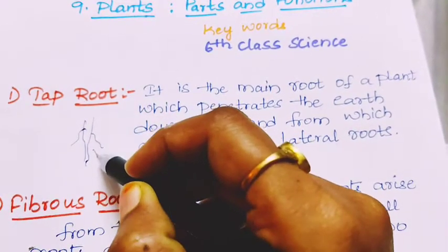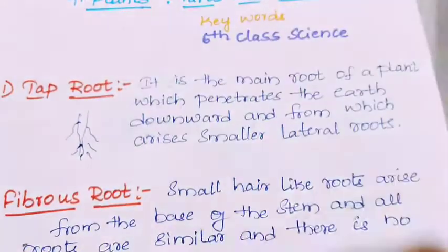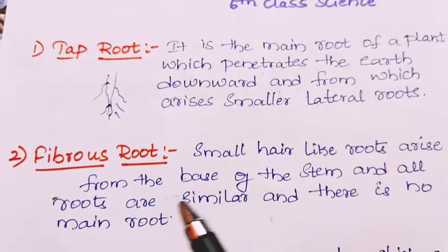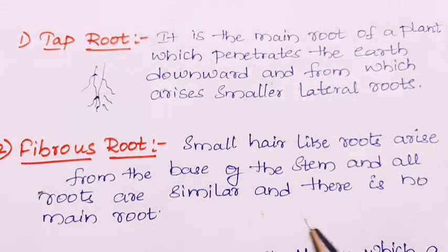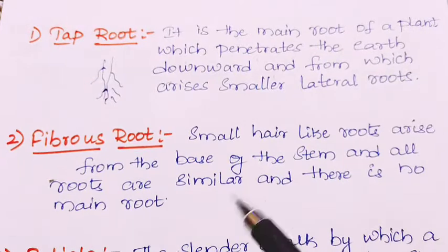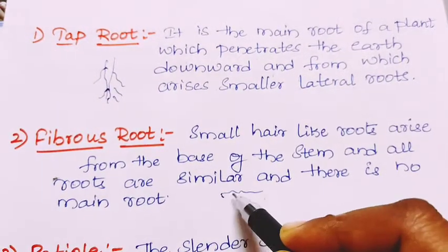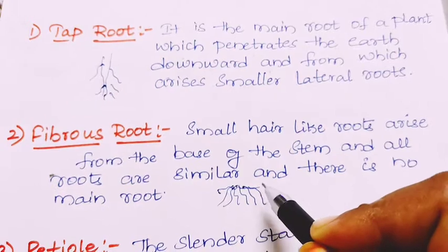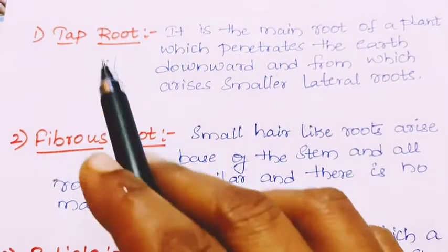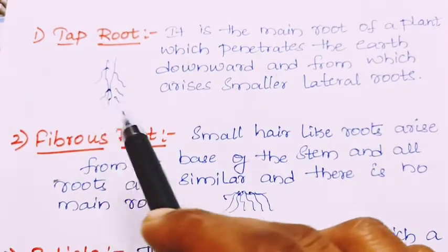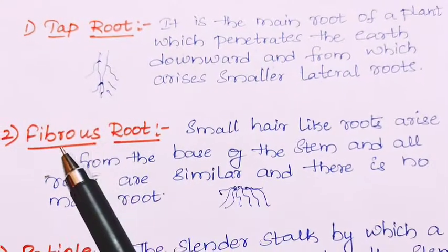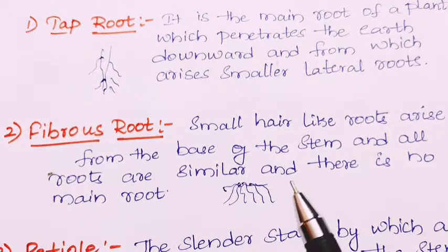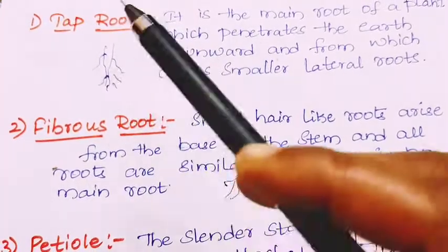On the taproot, small lateral roots can be seen. Fibrous roots are small hair-like roots that arise from the base of the stem, and all roots are similar — there is no main root. They all arise from the same place, which is why they are called fibrous roots. In a taproot system there is a main root with lateral roots, but in a fibrous root system all roots arise from the same place and are similar in size.